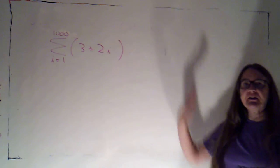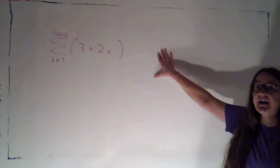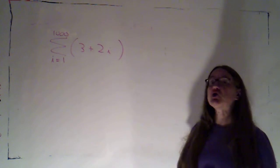Okay, I want to just practice using the rules and formulas that we've just learned for sums to evaluate this particular sum. So I'm adding up the sum as i goes from one to a thousand, three plus two i.